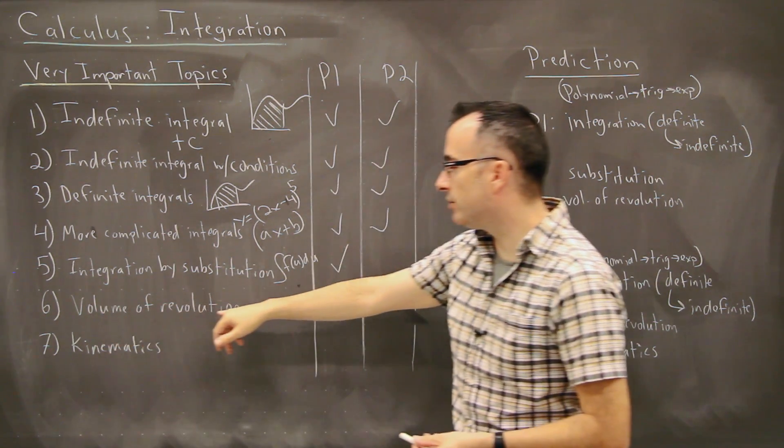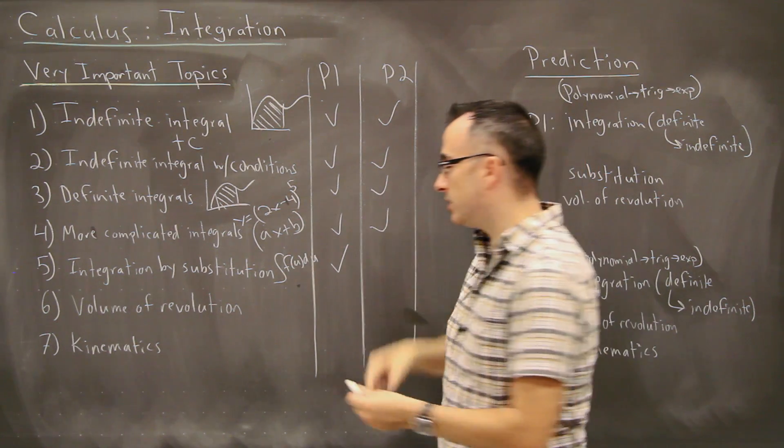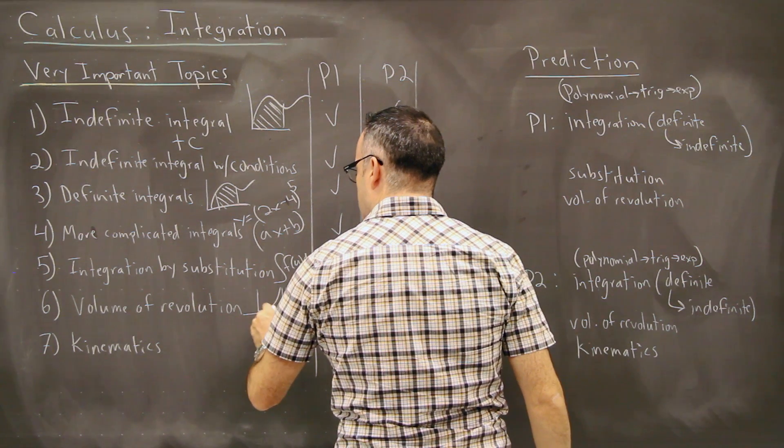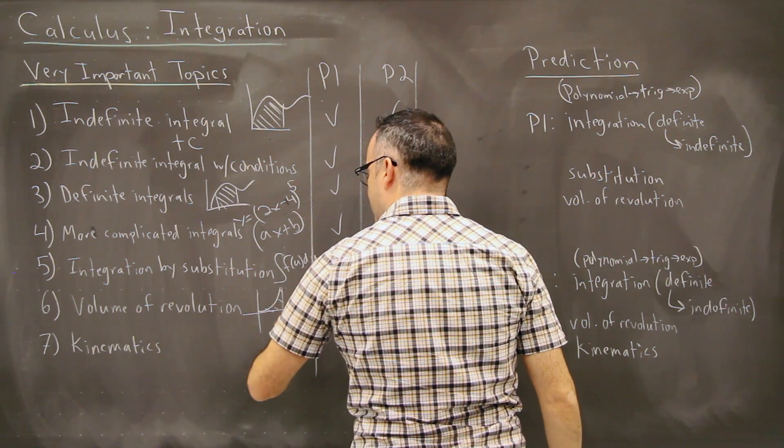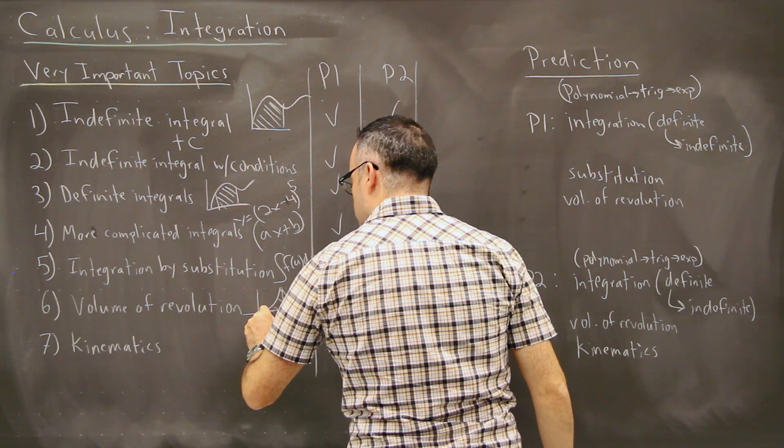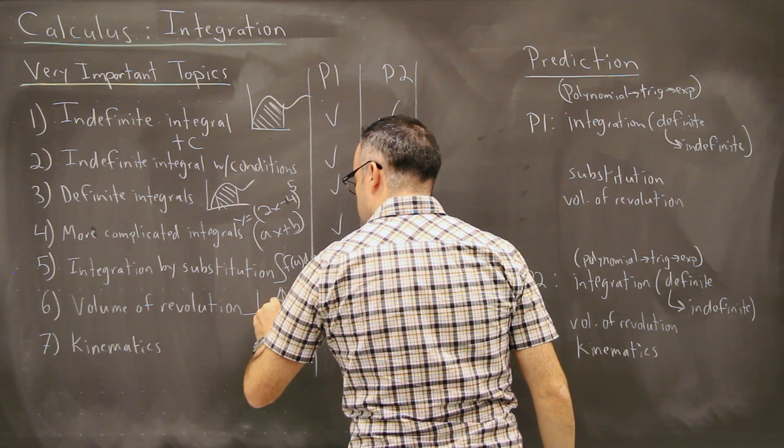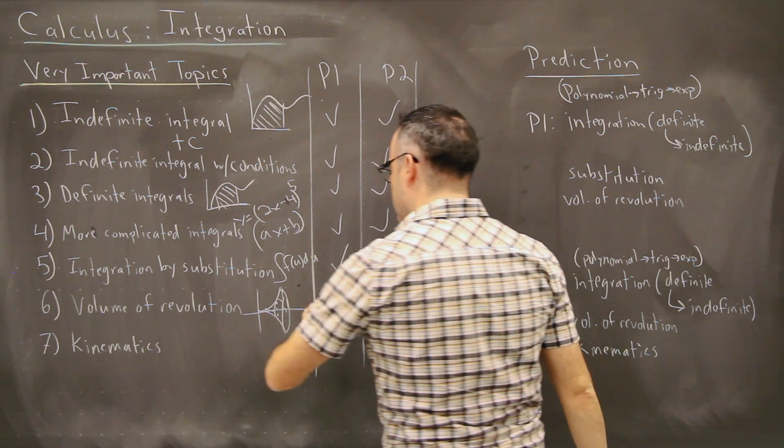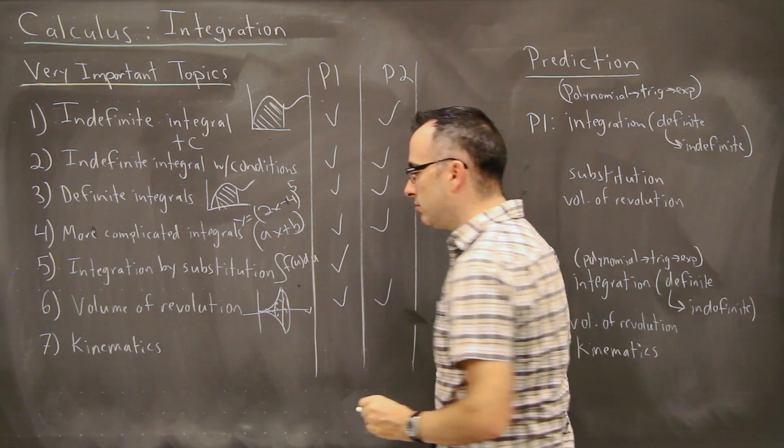Then we have the volume of revolution. This is when you take some sort of function, let's say, I don't know, like x squared or something like that. That's just the positive version of it, let's say. You take that and you revolve it around the x-axis by 360 degrees. So you go kind of like this. So it makes some sort of shape like this. And so you figure out what's the volume of that thing. And so this one here shows up on paper one and paper two. It's pretty common.